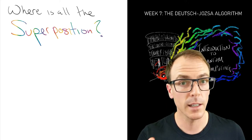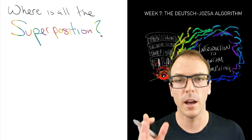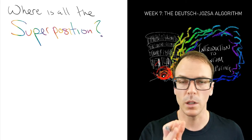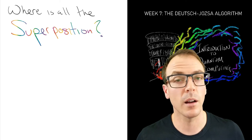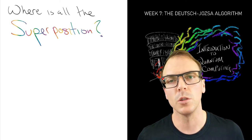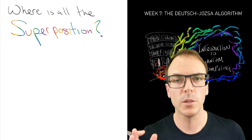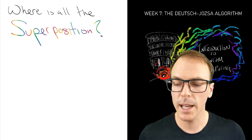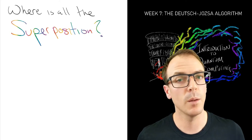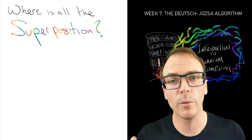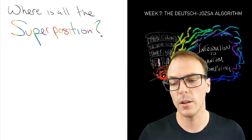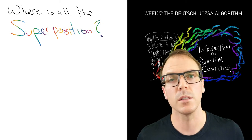Classically we have to check each input in serial, or maybe in parallel, but then we'd be counting how many computers we need to check each input in parallel. Quantum mechanically, we introduced this quantum oracle which implemented a reversible version of each function, and now we're going to find out how many quantum queries we need.